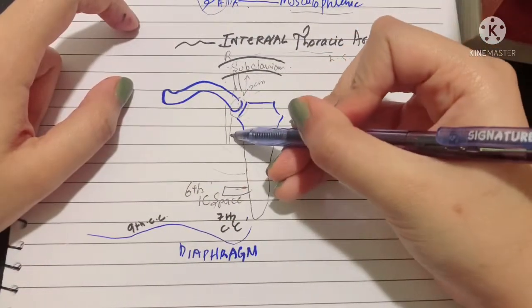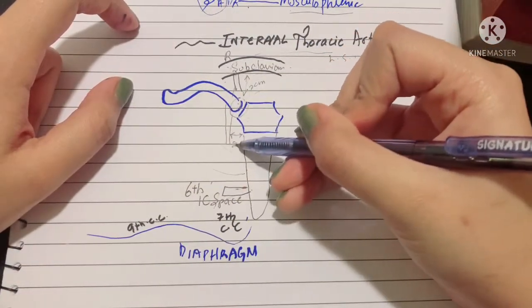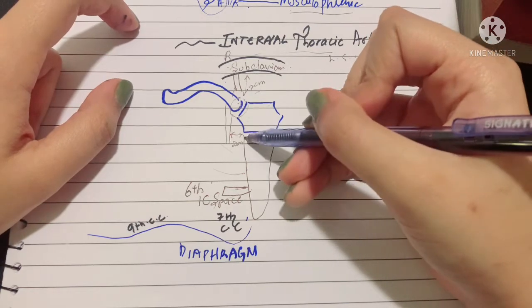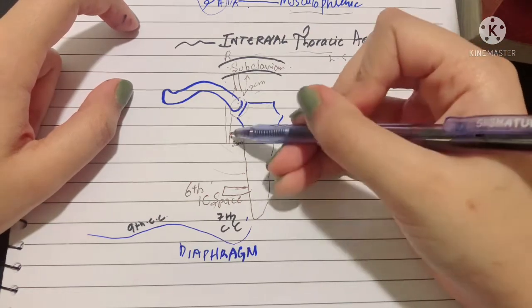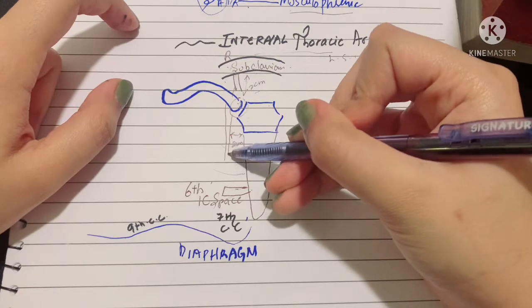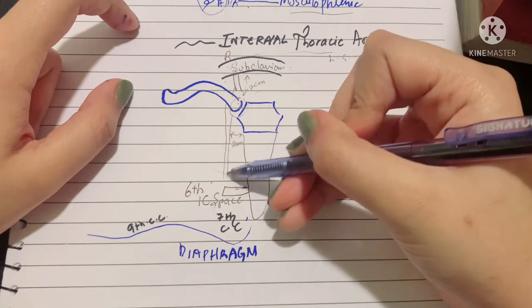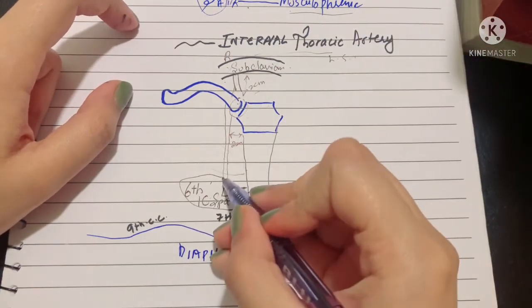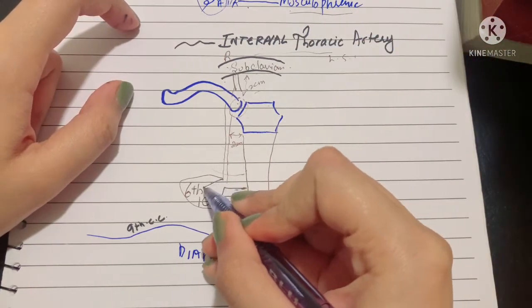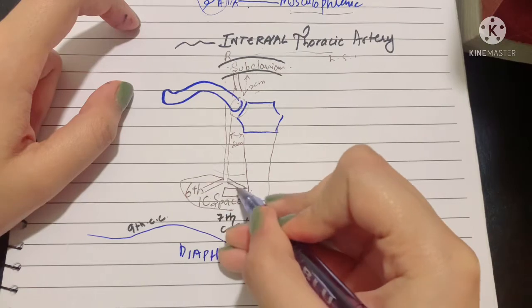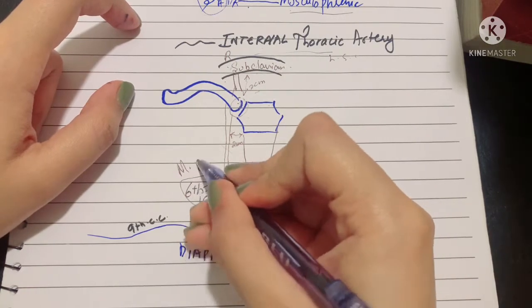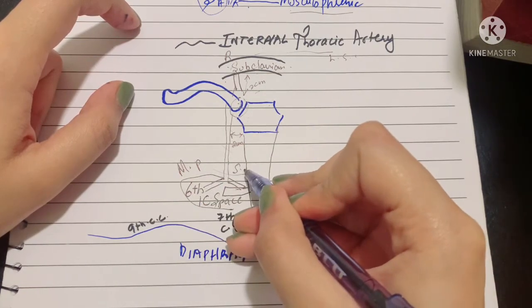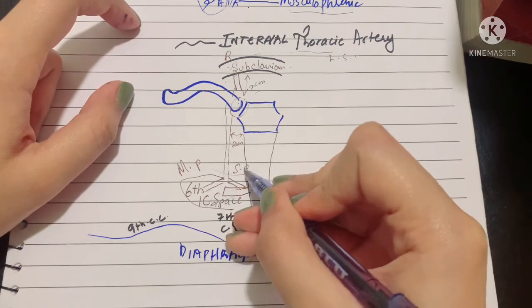At a two-centimeter distance from the lateral border of the sternum, it runs downwards and finally comes to the sixth intercostal space where it terminates by dividing into its terminal branches: the musculophrenic and the superior epigastric artery. That was the origin, course, and termination of your internal thoracic artery.